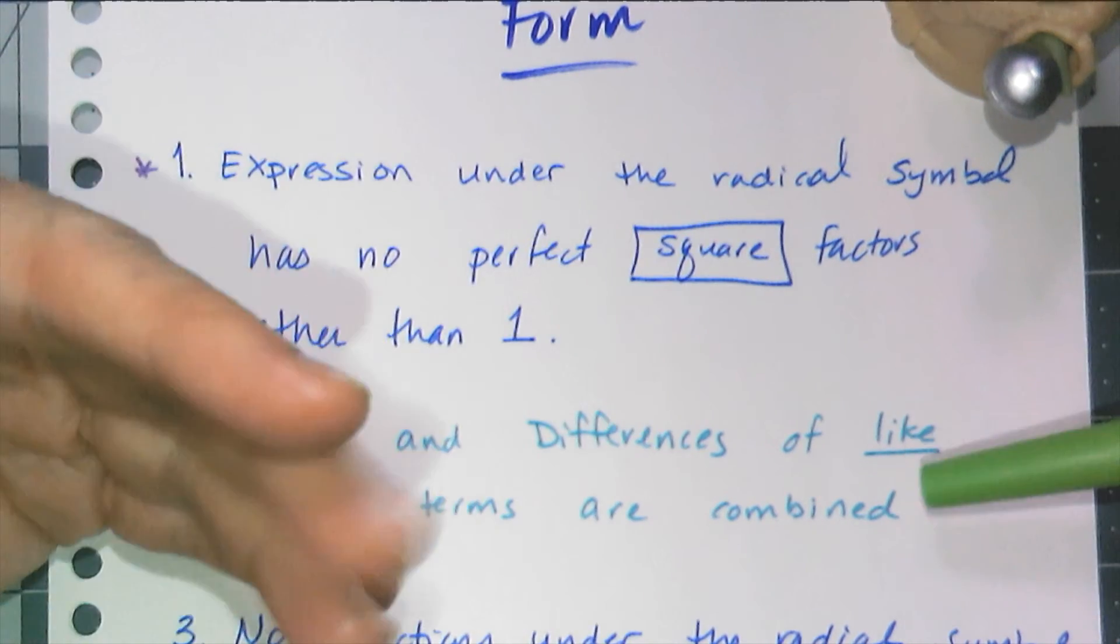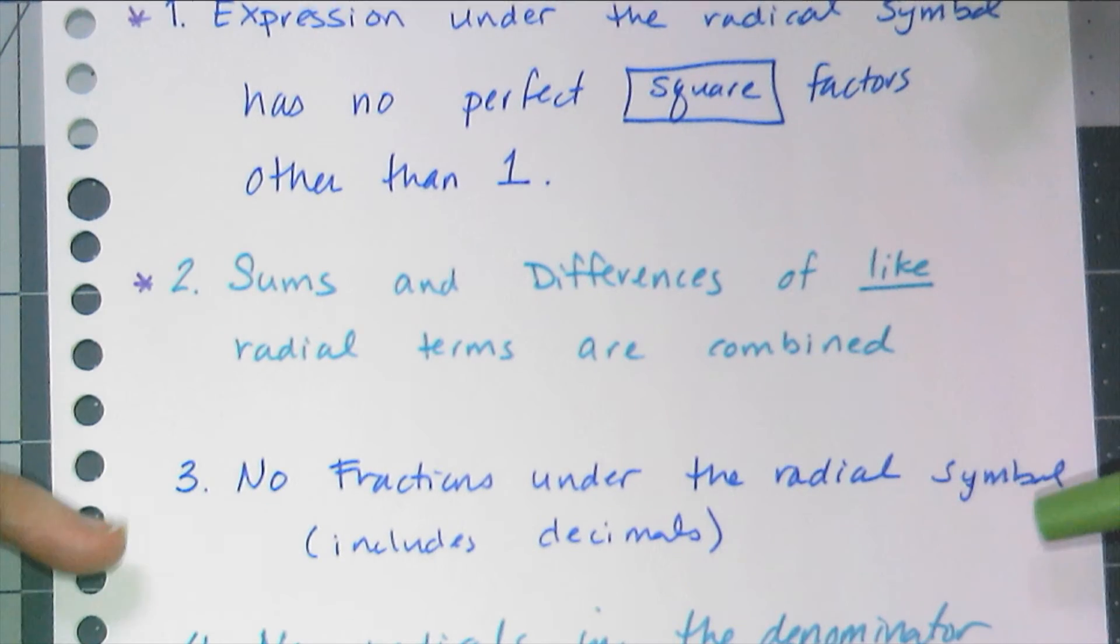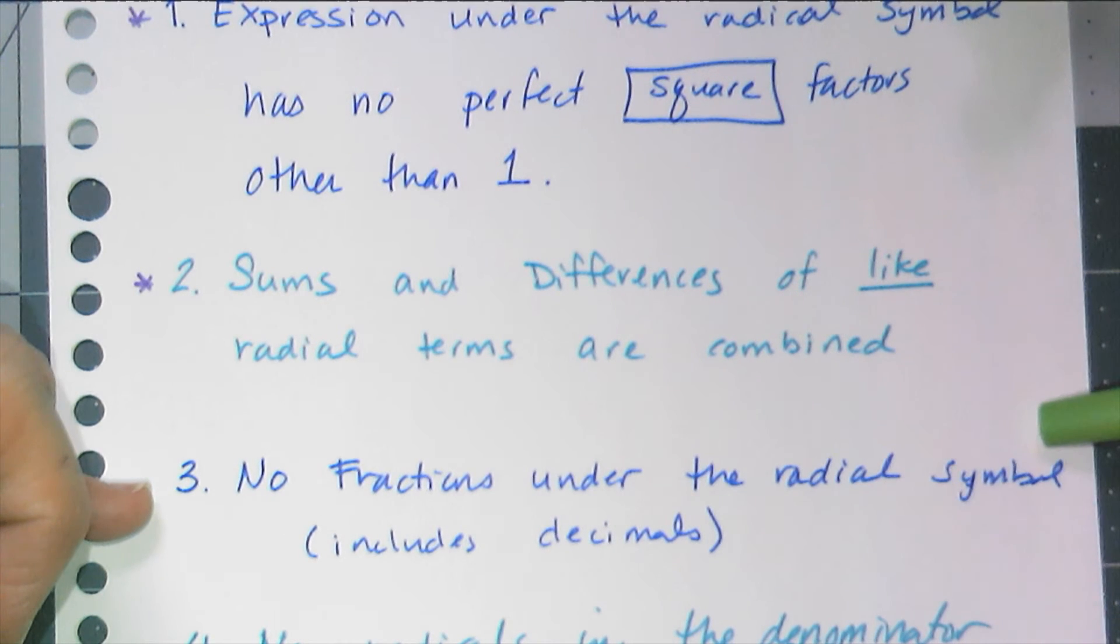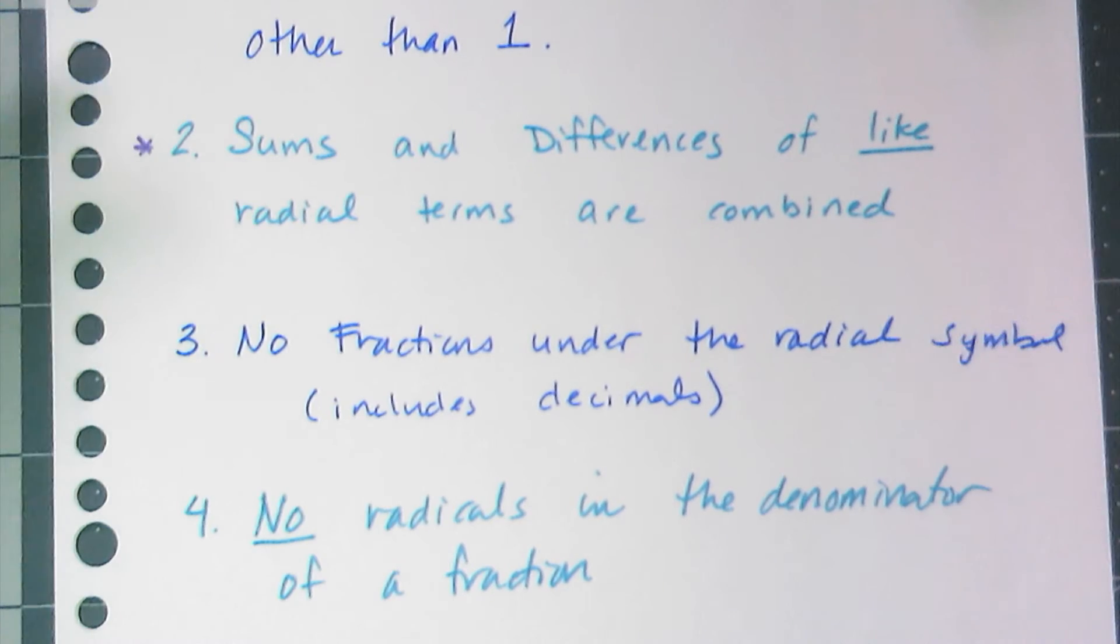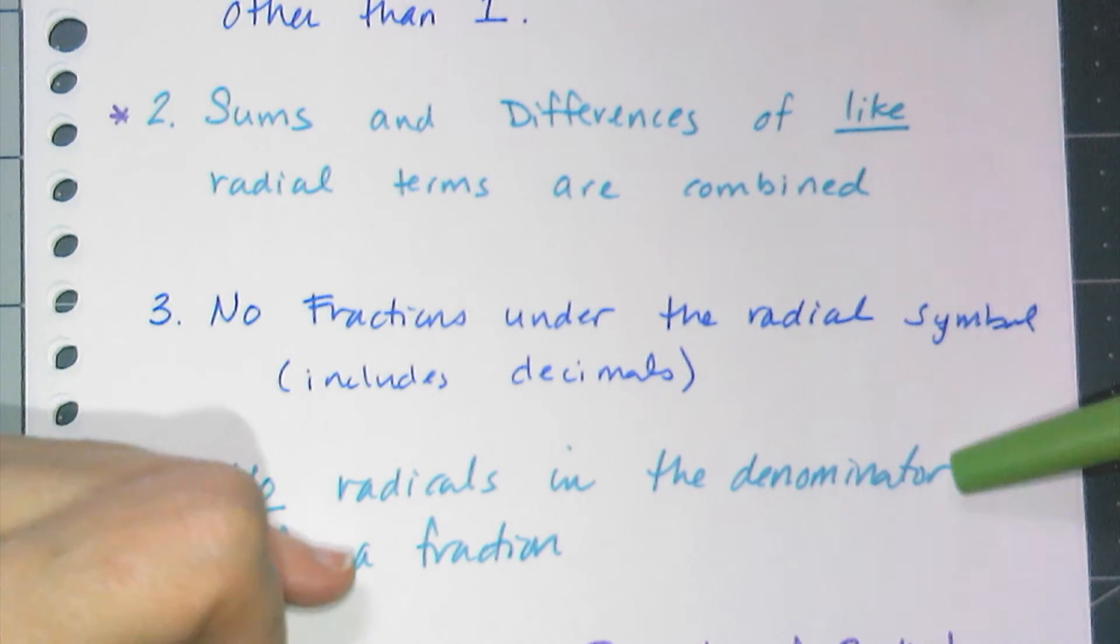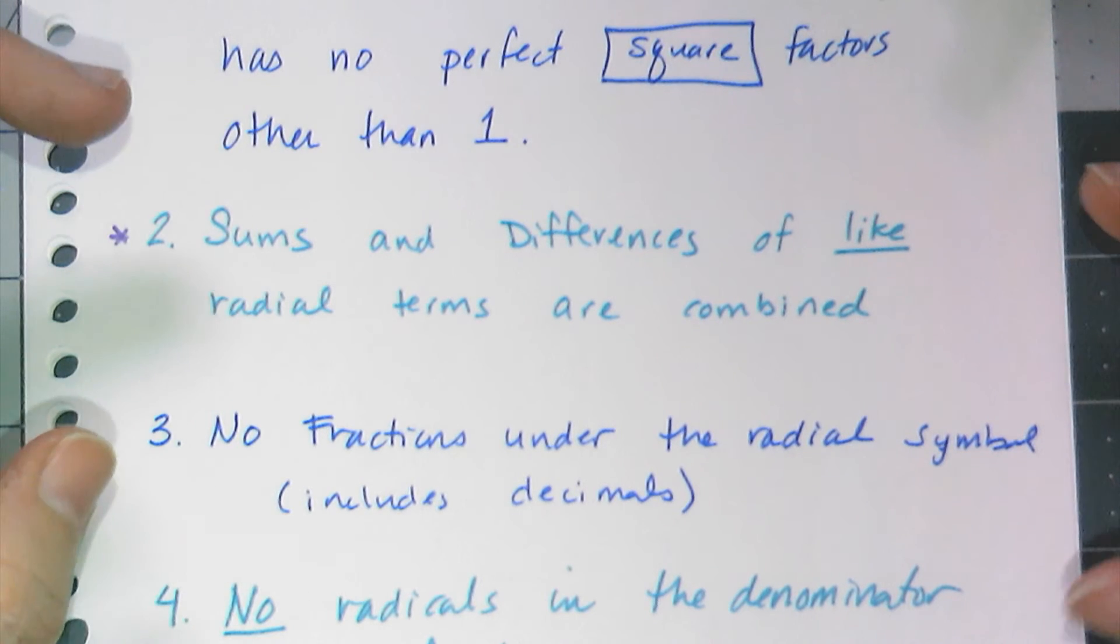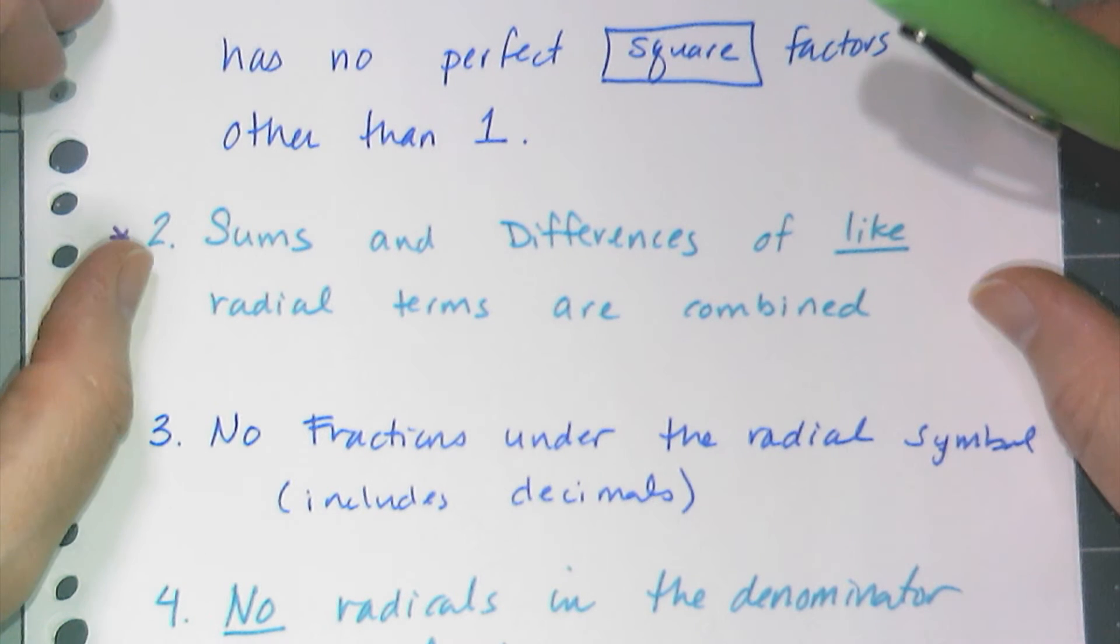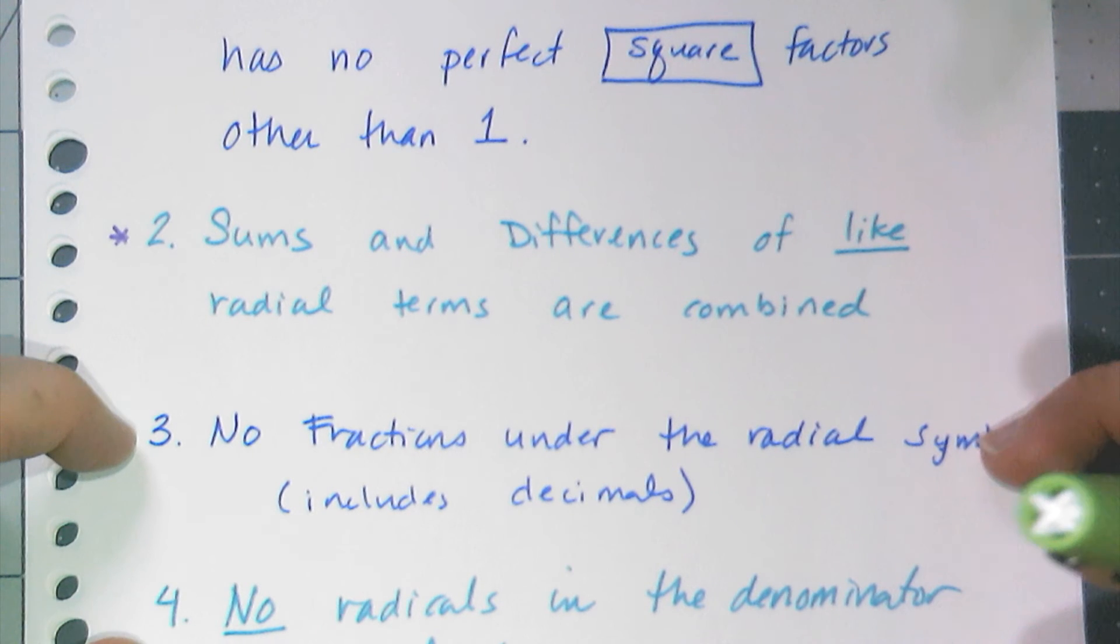And then the two fraction ones: you cannot have a fraction under a radical—that includes decimals. There's always a way to simplify that fraction and get rid of it from under the radical. And then no radicals in the denominator of a fraction. We're going to chunk up how to deal with these. So in the first video we're going to talk about simplifying perfect square factors and like radical terms. In the second video we're going to talk about the fractions.